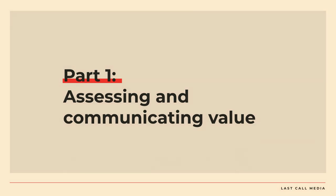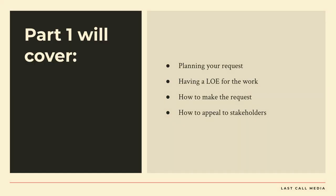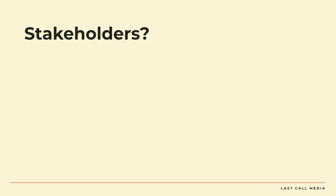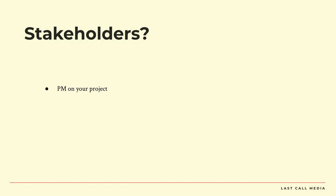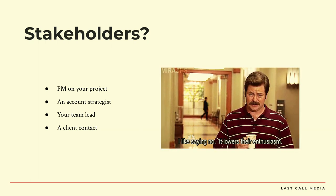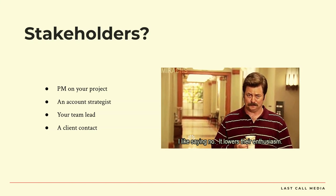So part one: assessing and communicating value. We're going to talk about planning your request, having a level of effort for the work, how to make the request, and how to appeal to stakeholders. Stakeholders — I'm going to use this a lot. It might be a PM on your project, an account strategist, your team lead, or a client contact. But in the end, you're all part of the same team. Don't think of them as an adversary — think of them as someone that's on your team, vital to doing it well.